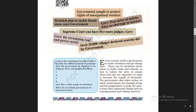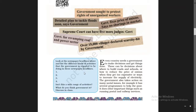The last headline: 'Over 15,000 villages declared scarcity-hit by government.' The question in the left margin asks: look at the newspaper headlines above and list the different kinds of activities that the government is reported to be doing. From the first headline, government sought to protect rights of unorganized workers; from the second, government made a detailed plan to tackle floods soon.